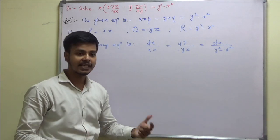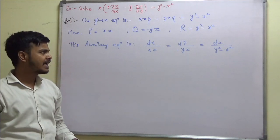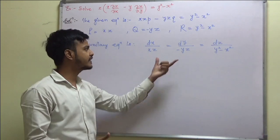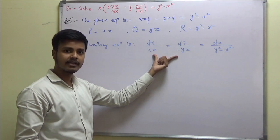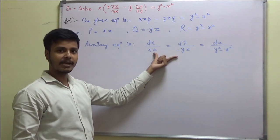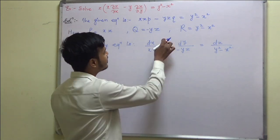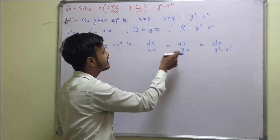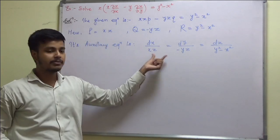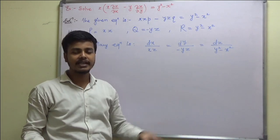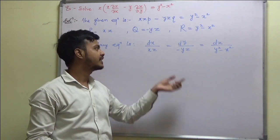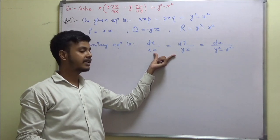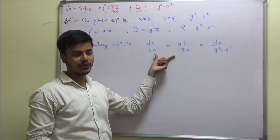Think over it and try to apply the method. Can we apply method 1? Yes, we can apply method 1. Why? Because if I take the first two ratios, z cancels and the variables are separable — just integrate to get the first integral. So yes, this problem can be solved with method 1.